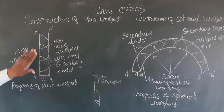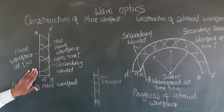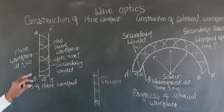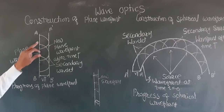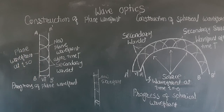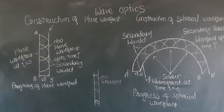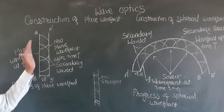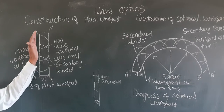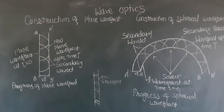Let AB be the plane wavefront at time t equal to zero. According to Huygens' Principle, every point on this wavefront acts as a secondary source and emits spherical wavelets. They travel in the forward direction; in the backward direction they are ineffective. So they travel in the forward direction.